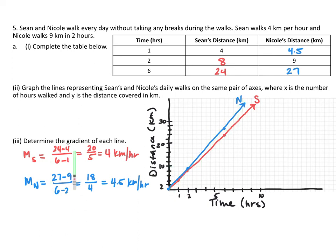For the gradient, you can use slope formula, or you can just use what they tell us here. If he's walking 4 kilometers per hour, that's just the gradient. So his gradient is 4 kilometers per hour. If Nicole is walking 9 kilometers in 2 hours, that would be 4.5 kilometers per hour. So her gradient is 4.5 kilometers per hour.